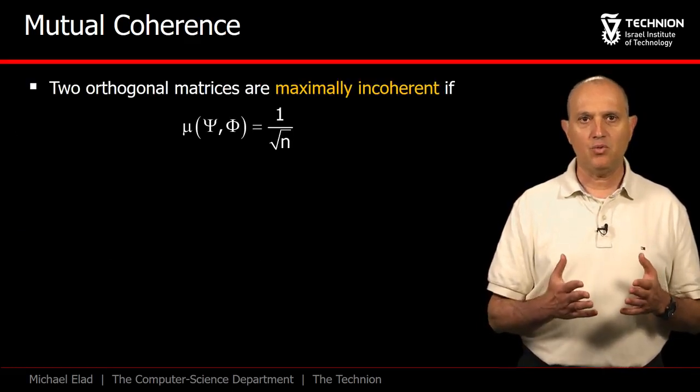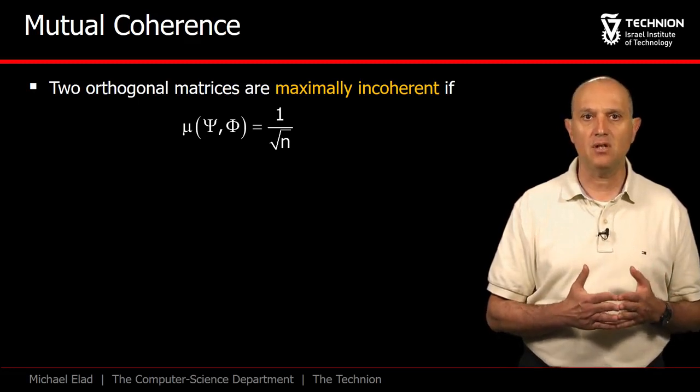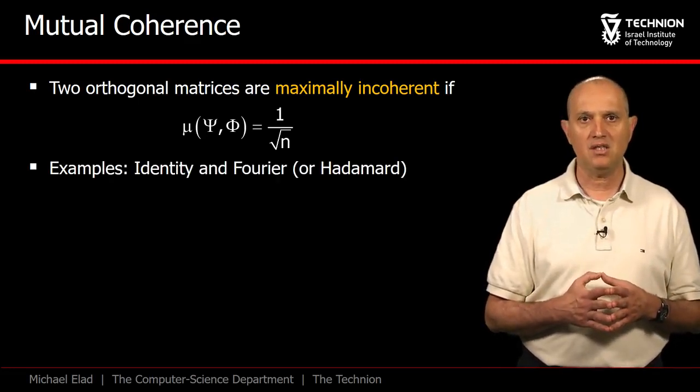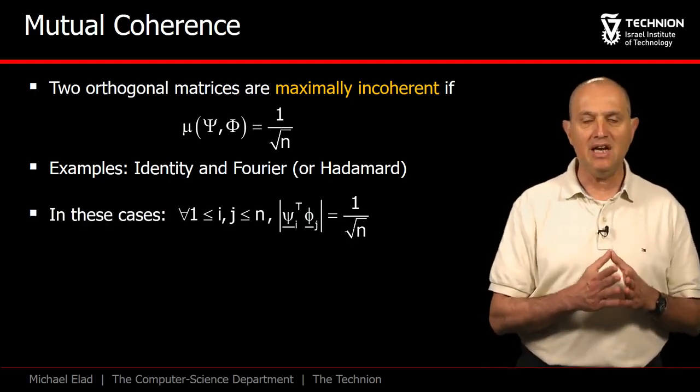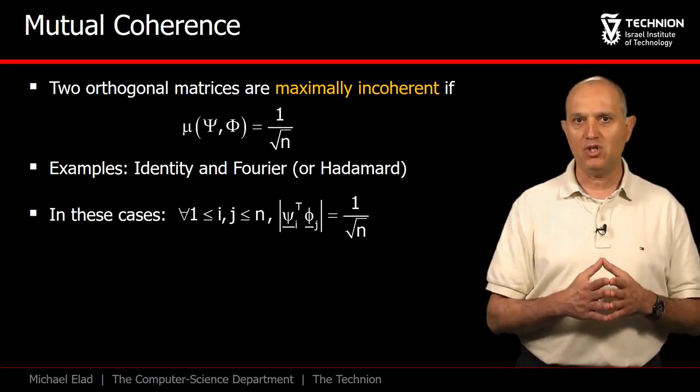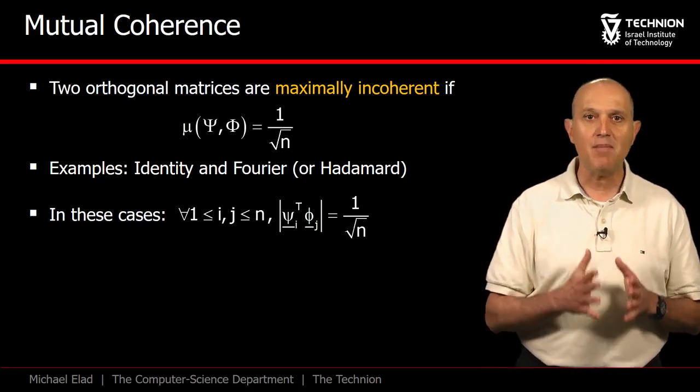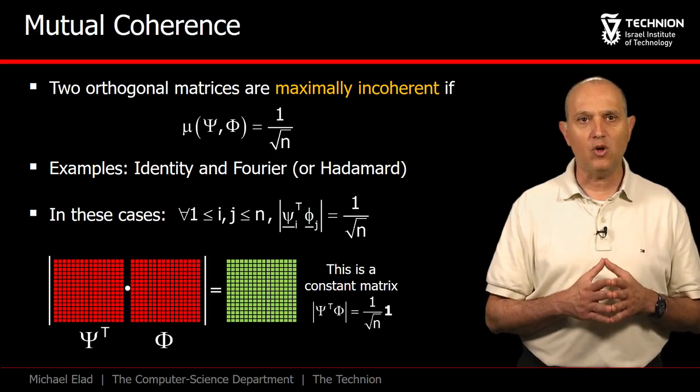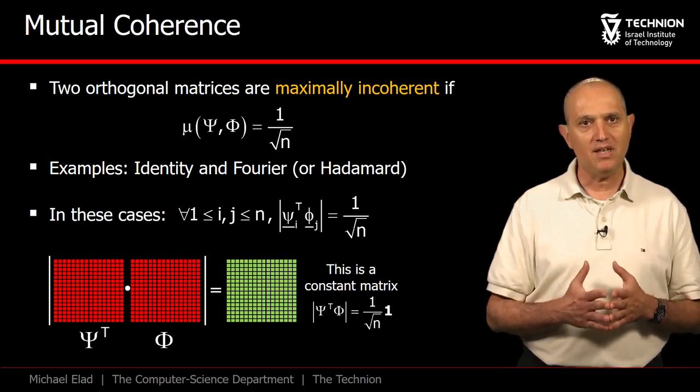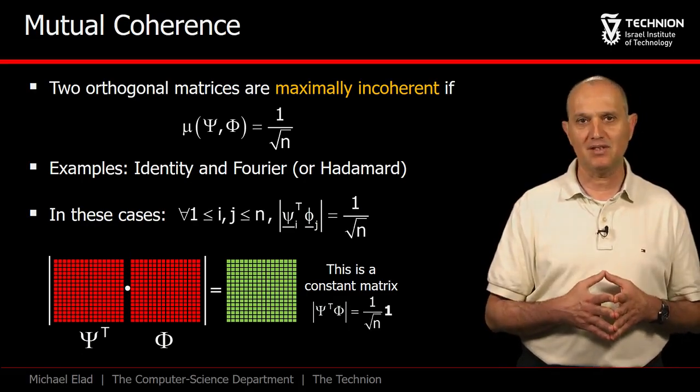A question that follows is whether one could find a pair psi and phi that achieves this lowest possible value. We refer to such a case as a maximally incoherent ortho pair. Indeed, the identity and the Fourier matrices lead to such a maximally incoherent pair, for which all the entries in the matrix psi transpose phi have the same absolute value, 1 over square root of n. For those of you who do not like complex matrices, we could replace the Fourier by the Hadamard matrix getting the same maximal incoherence property.